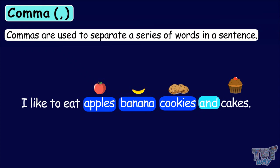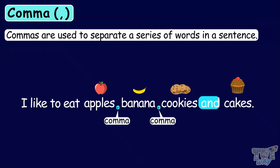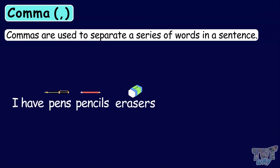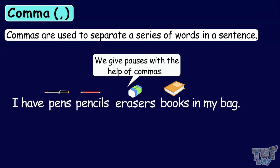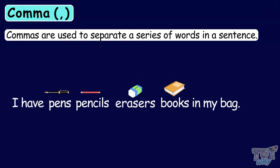I have pens, pencils, erasers, books in my bag. So we need to give pauses between all naming words in the sentence, and we give pause with the help of commas. When we have a series of naming words in a sentence, the initial naming words are separated with commas, and the last one is separated with the conjunction 'and'.